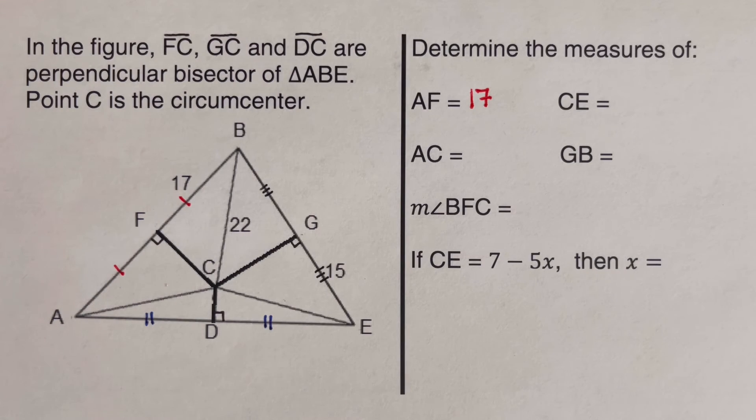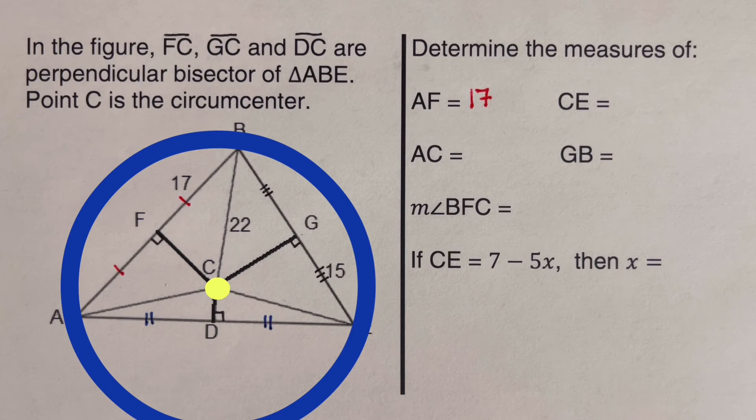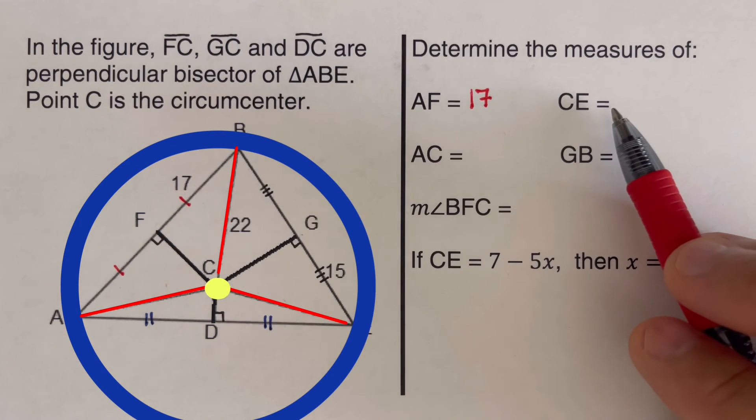Now we remember that since we say point C is the circumcenter, that means that is the center of the circumscribed circle or the circumcircle of the triangle. This tells us that line AC, BC, and EC are radii of the circle. So that we can go ahead and determine CE.